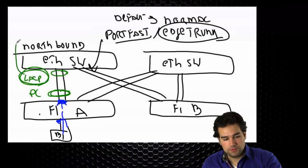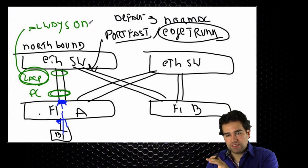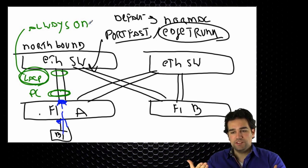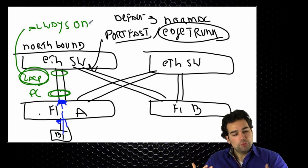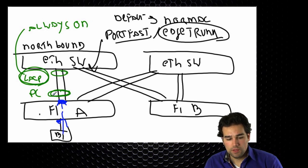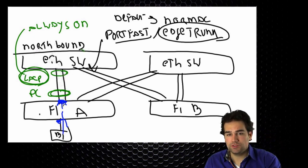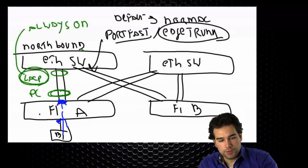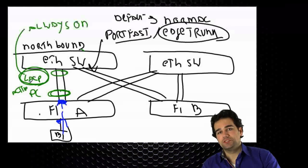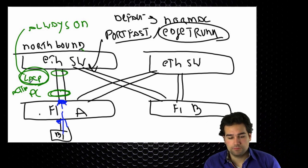Port channels from the UCS system always run LACP. I cannot disable that — this is always on. On an NXOS switch I would say channel-group mode active, passive, or on, where active and passive enable LACP and mode on means static configuration with no negotiation. The port channel coming from my fabric interconnect always has LACP enabled. It's running in active mode, meaning it always initiates the negotiation. Active-active talking to each other works perfectly and is even best practice to bring the links up fast.